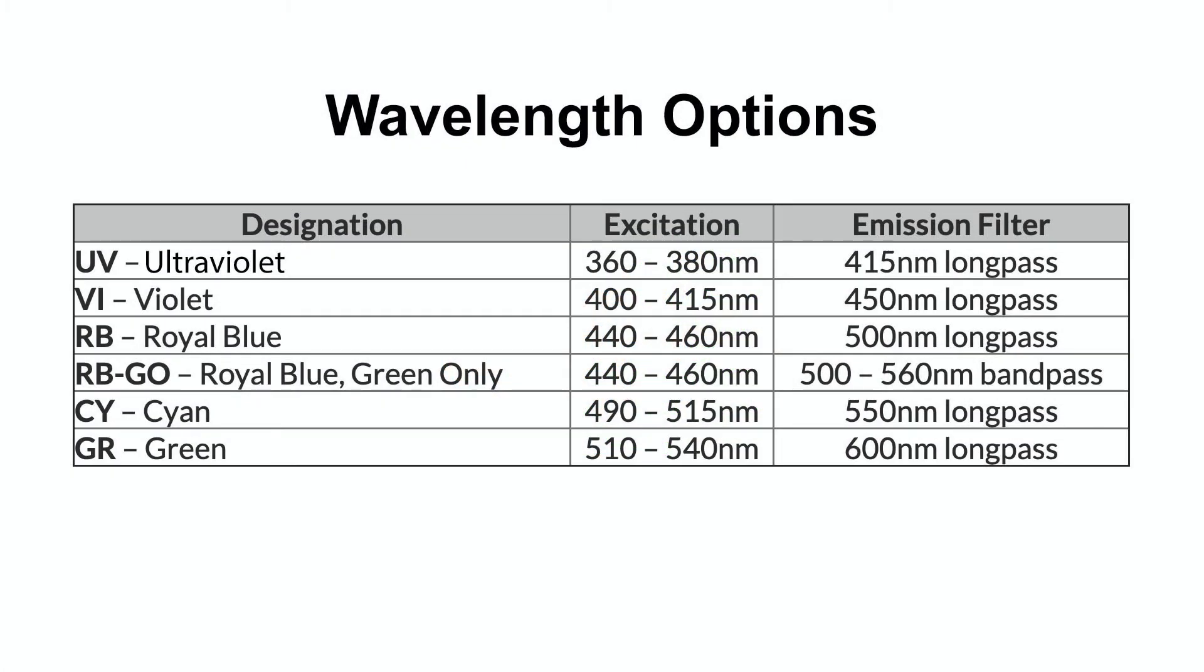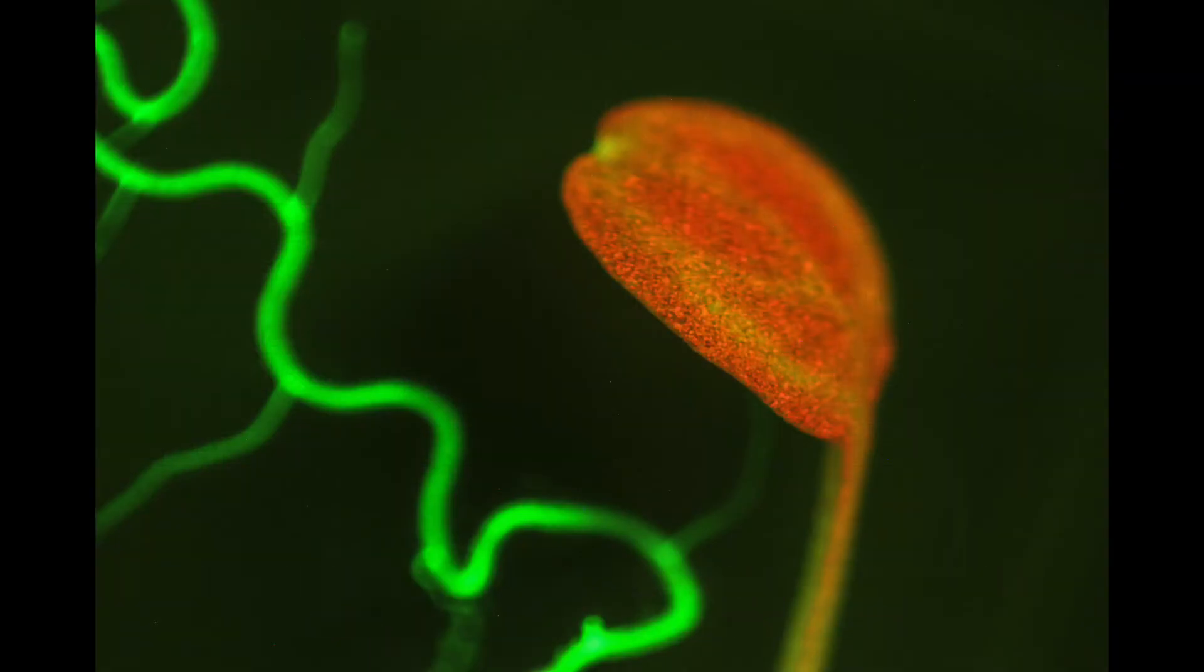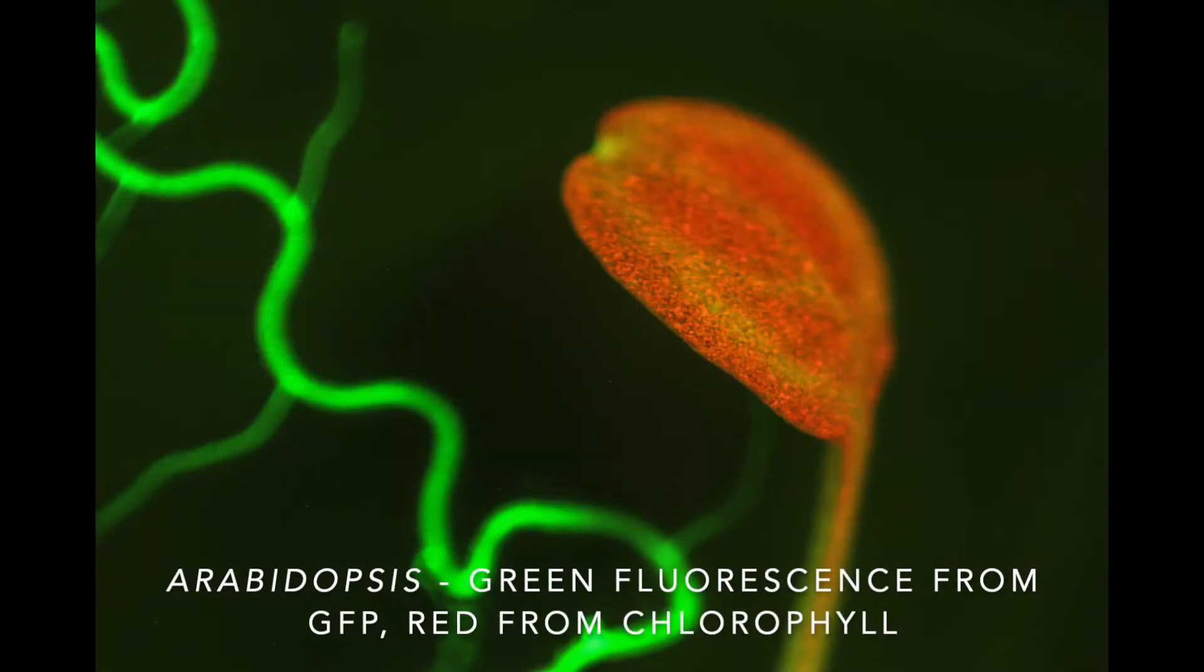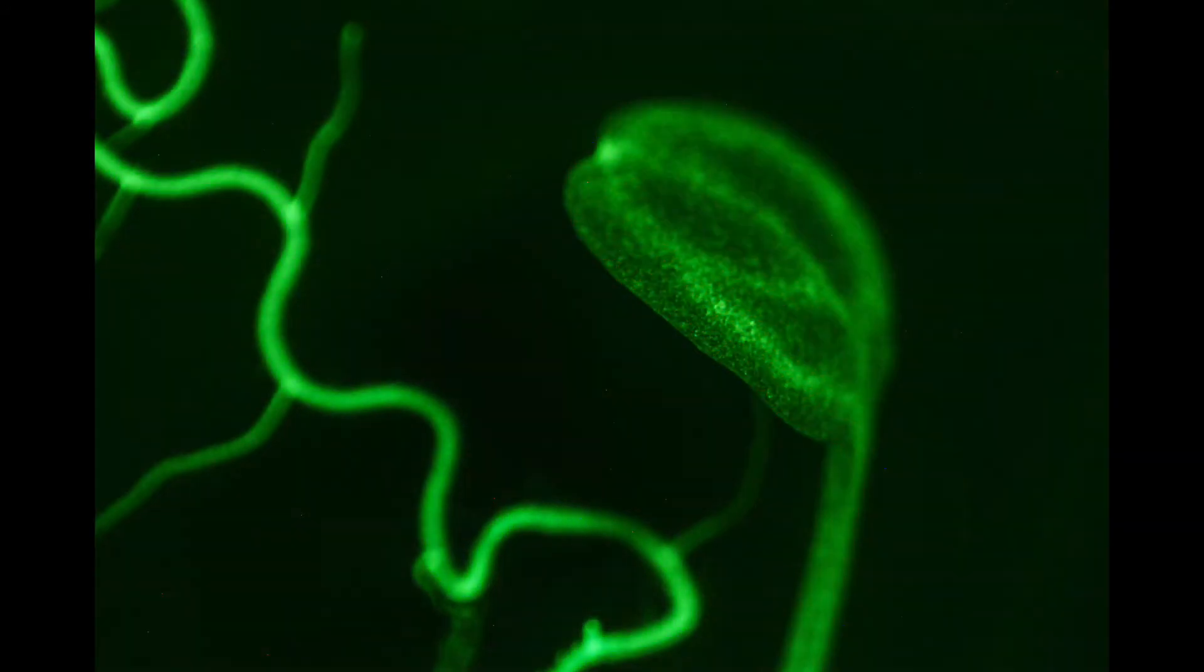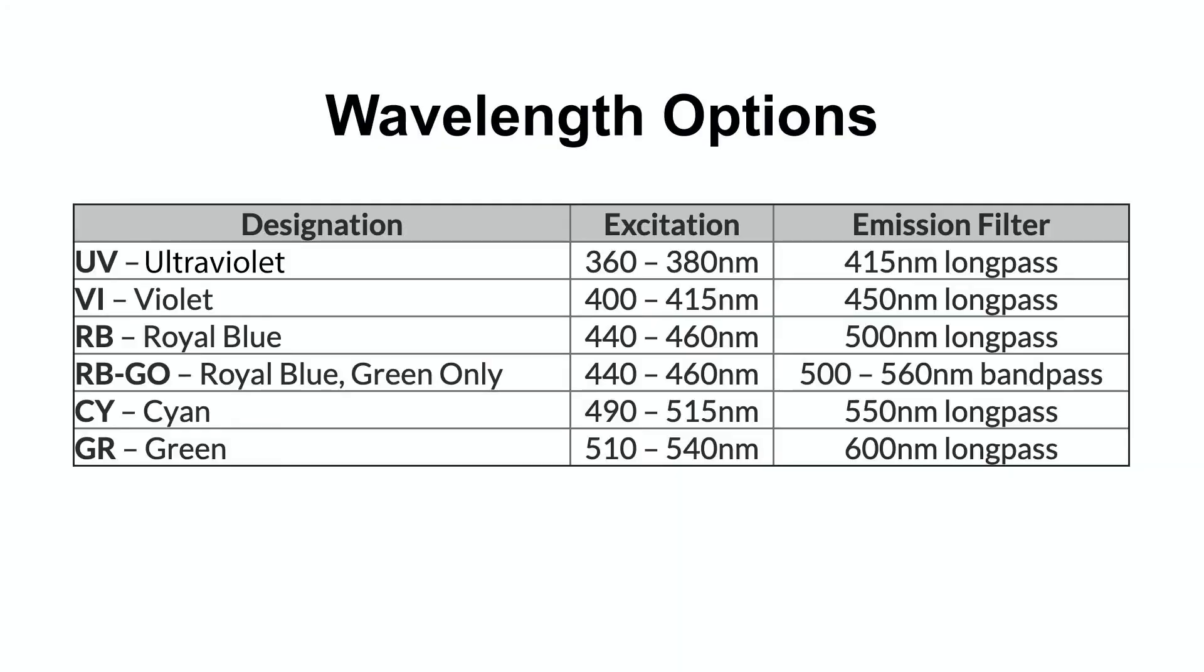Different subjects need different excitation wavelengths to make them fluorescence. This table summarizes the available excitation wavelengths and the corresponding filter glasses. Note that there are two different options for filter glasses with the royal blue excitation: long pass, which will transmit green, yellow, orange and red fluorescence, and band pass, which only transmits green fluorescence. The purpose and use of these two options is explained on the Nightsea website.